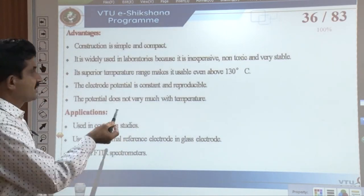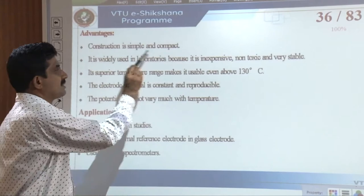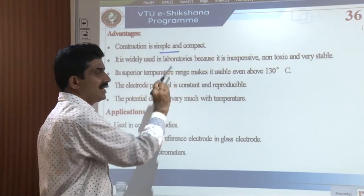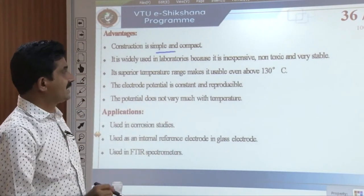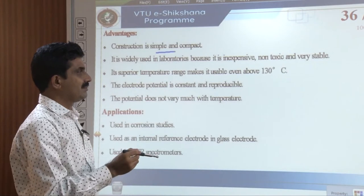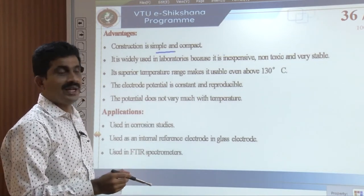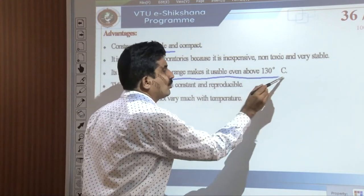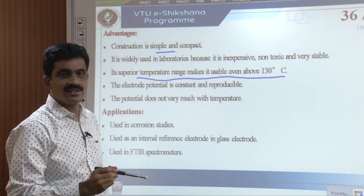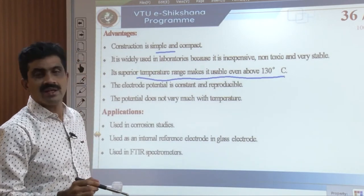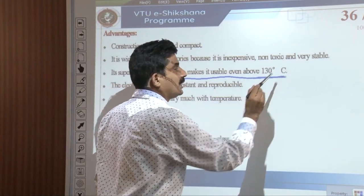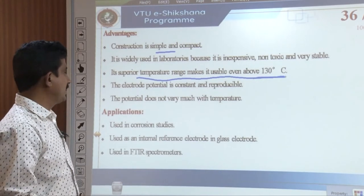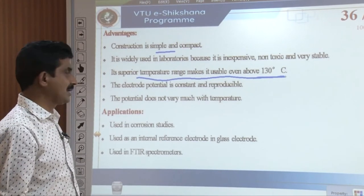Advantages of the Ag-AgCl electrode: construction is simple and compact, just like the calomel electrode. It is widely used in the laboratory because it is inexpensive, non-toxic, and very stable. Its superior temperature range makes it usable even above 125–130°C. The electrode potential is constant, reproducible, and does not vary much with temperature.